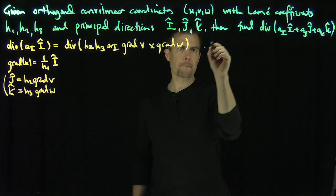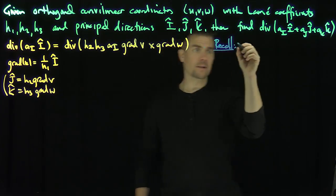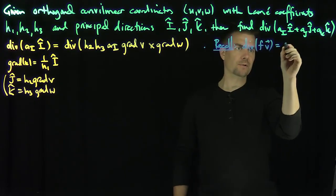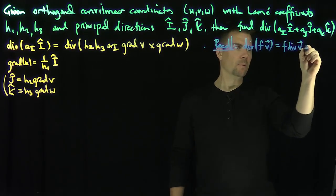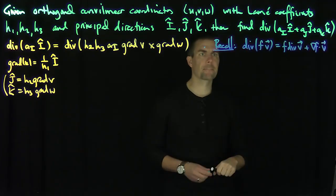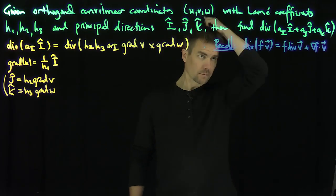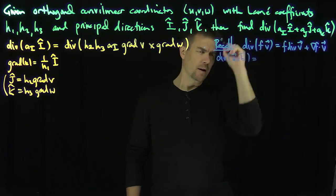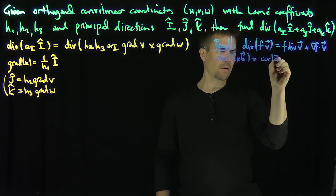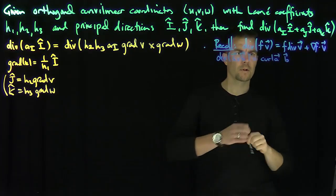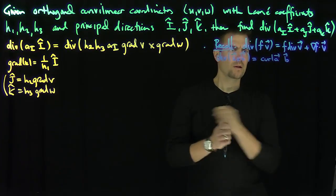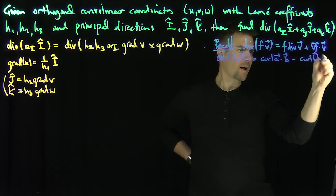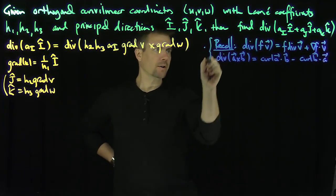Now let's recall that in general, div(f·V) = f·div(V) + grad(f)·V, and also that div(A × B) = curl(A)·B − curl(B)·A. We're going to use these two vector identities.